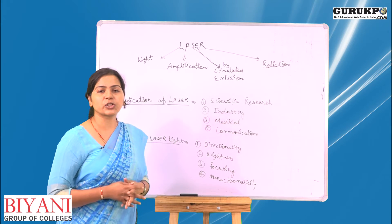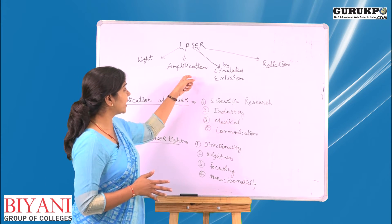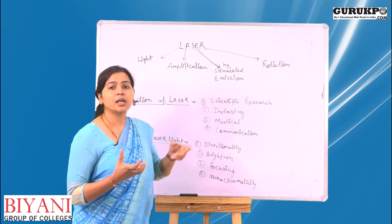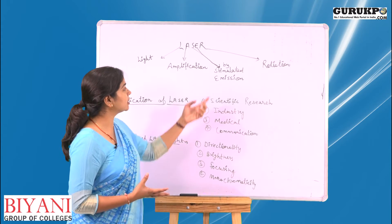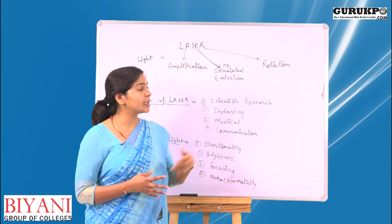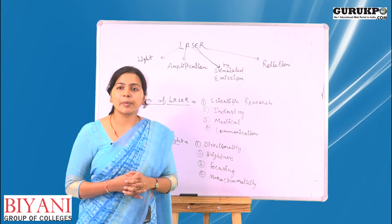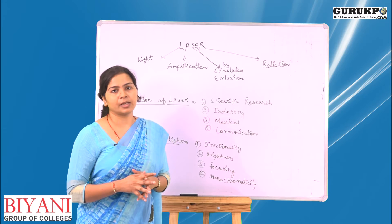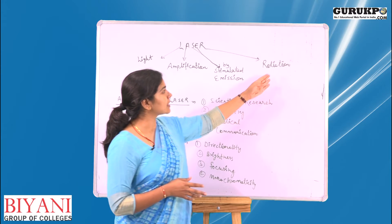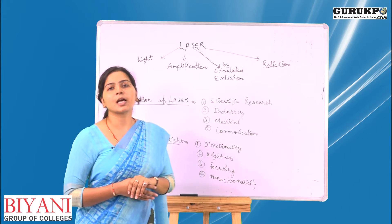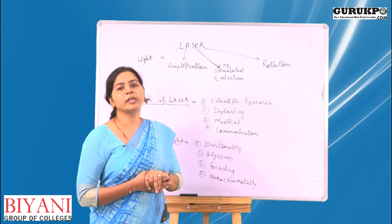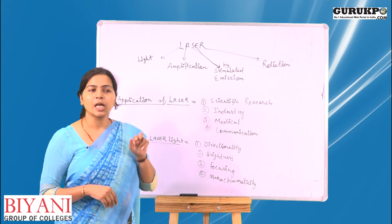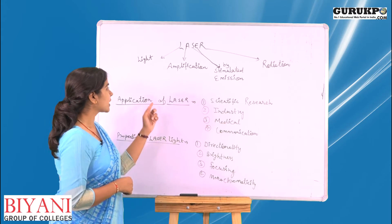Second is amplification. Amplification is a device which makes an intended signal stronger. And third is the stimulated emission — it is the process in which light is emitted in an amplified wave. And fourth is radiation, which is the process in which electromagnetic waves travel through a medium or vacuum.